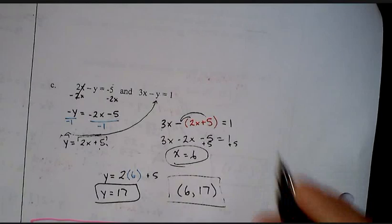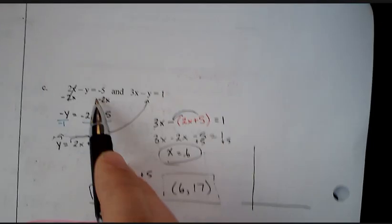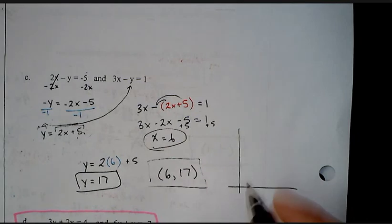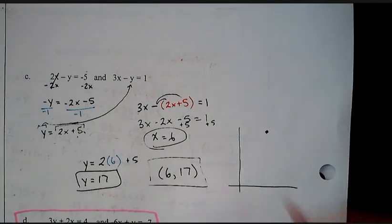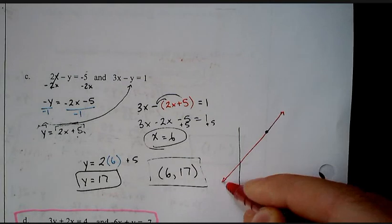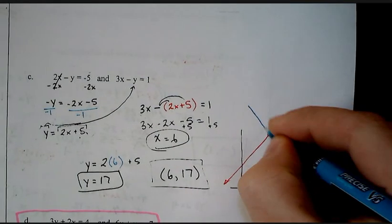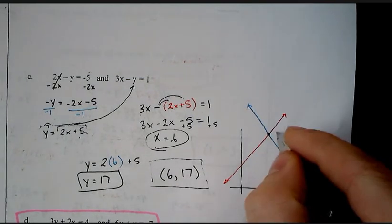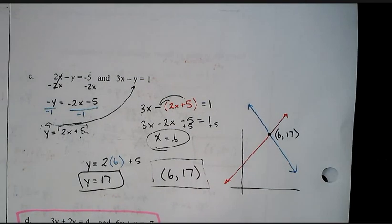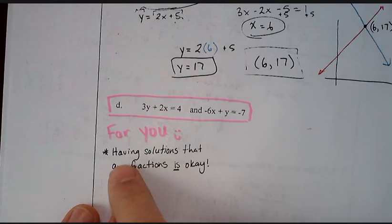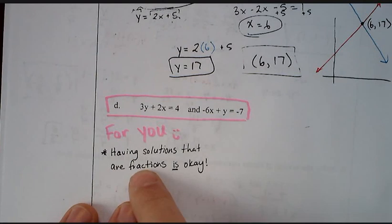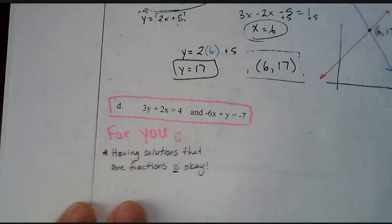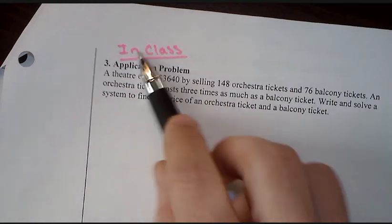And again, if we were to write these both in slope-intercept form and graph them, we might have something that looks like this. Just eyeballing it. And this would be at the point 6, 17 where they intersect. Again, if you have any questions, write them down. Letter B and letter D are for you. My note here is having solutions that are fractions is okay. That's totally fine. And then we will do applications in class together. So, don't worry about that.